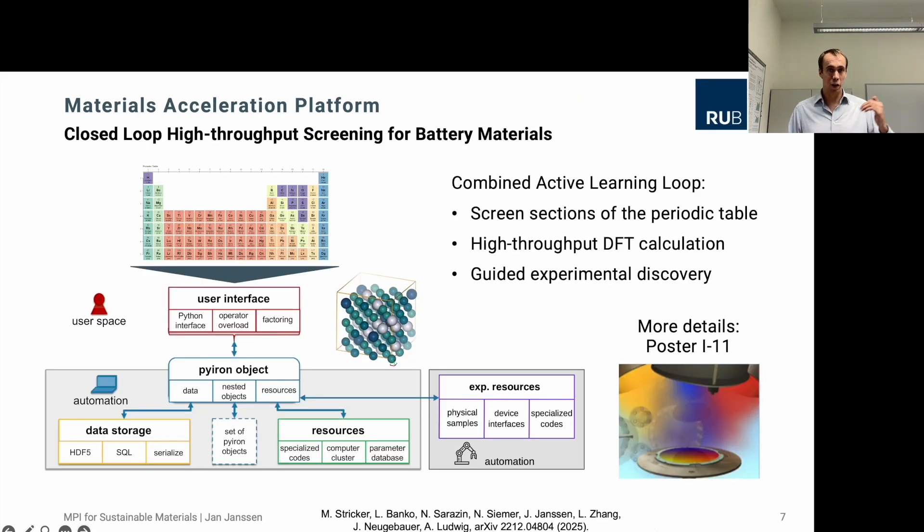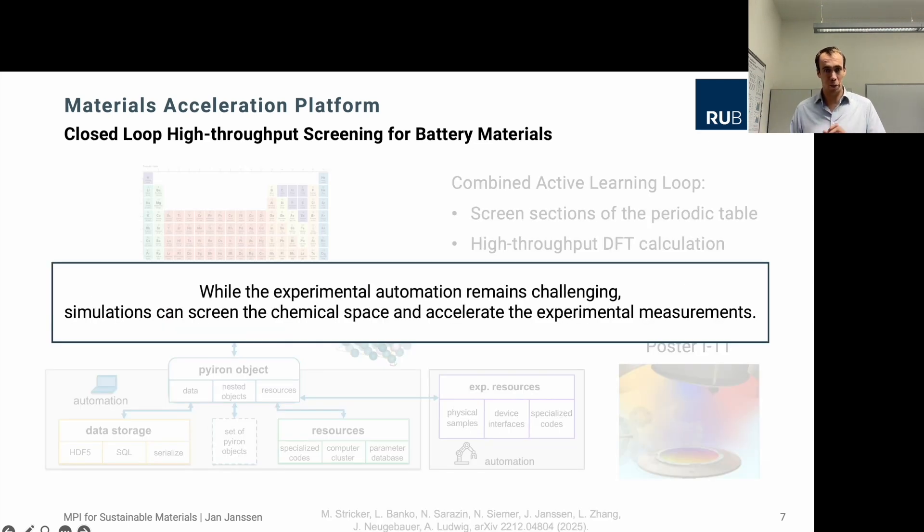On the other hand, the workflows also allow us to connect directly to experiments. When modern experiments already have Python interfaces, we can integrate them into our workflows. Here we collaborate with the Ruhr University in Bochum to really enable the high throughput screening for battery materials. The Ruhr University produces very nice wafers with different material compositions distributed over the wafer and we can reproduce these atomistic structures by screening the periodic table. There are still challenges in terms of automating the experiment and really accelerating the experimental measurements, but let me show you a very first prototype work.